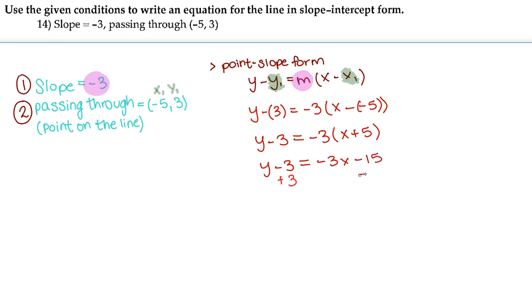And then y minus 3 equals negative 3x minus 15. Adding the 3 to both sides, we get y equals negative 3x minus 12.